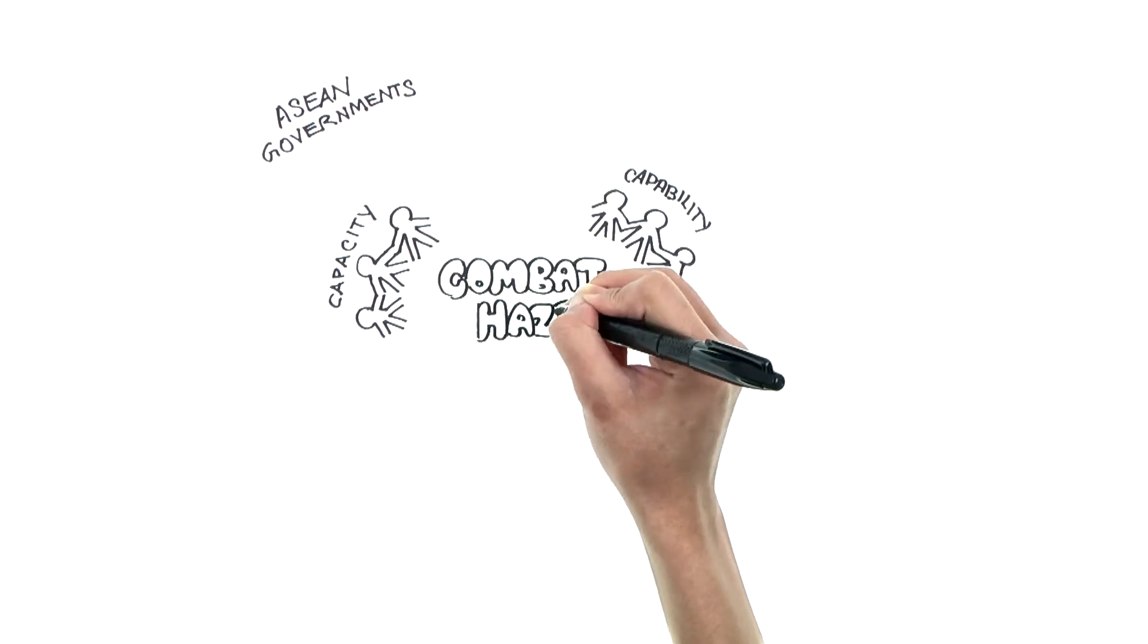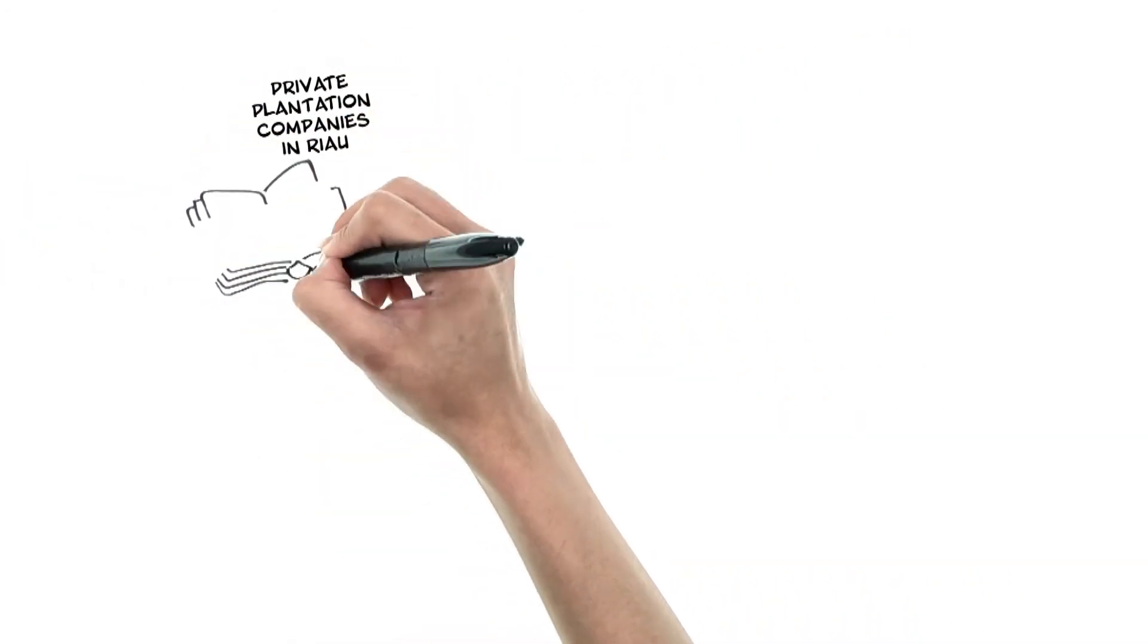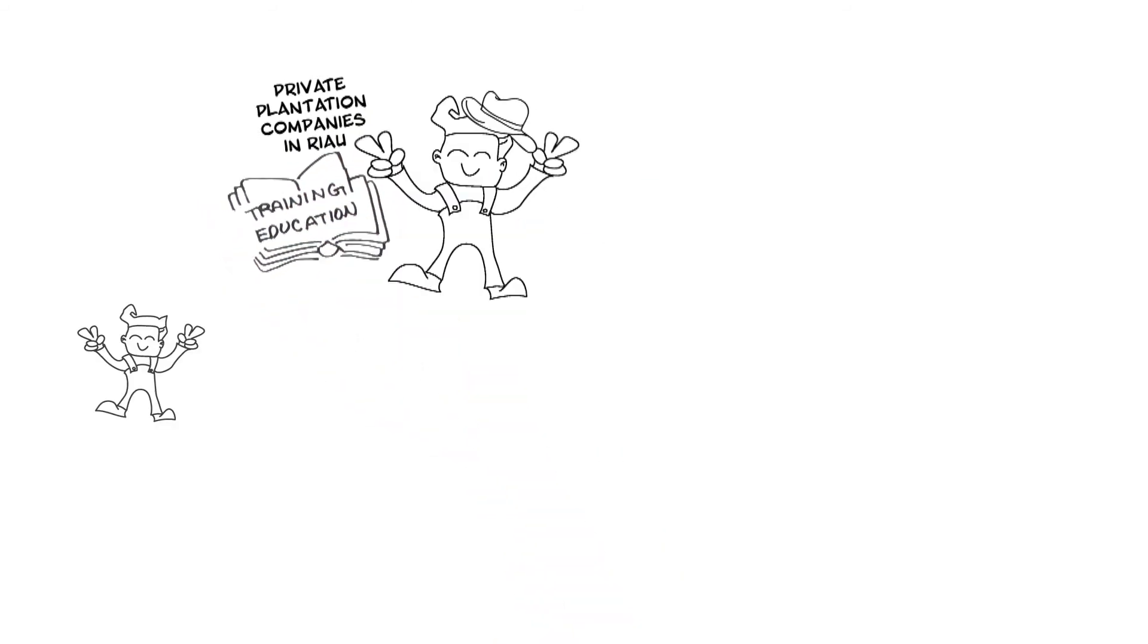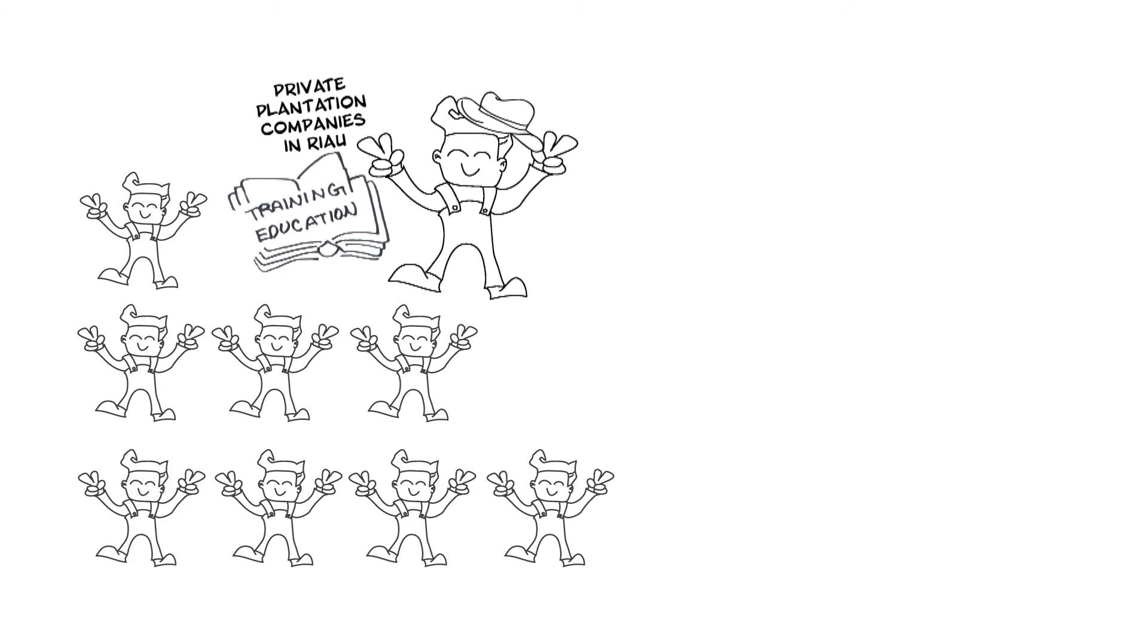Private plantation companies operating in Riau also have a big part to play in continuously training and educating local farmers. New jobs can also be offered to improve living standards. This will reduce the need for local villagers to commit illegal burning activities.